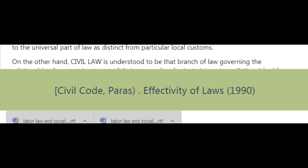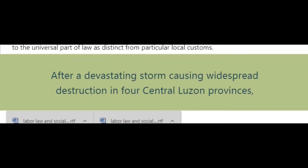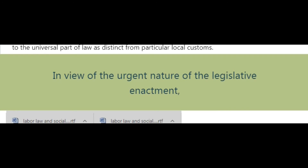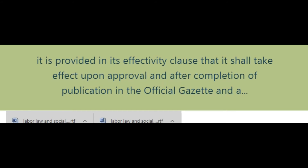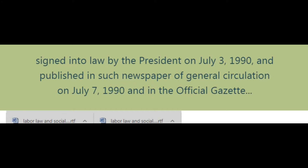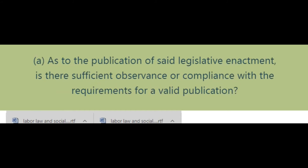Effectivity of laws, 1990: After a devastating storm causing widespread destruction in four Central Luzon provinces, the executive and legislative branches agreed to enact a special law appropriating P1 billion for relief and rehabilitation. Its effectivity clause provides that it shall take effect upon approval and after completion of publication in the Official Gazette and in a newspaper of general circulation in the Philippines. The law was passed by Congress on July 1, 1990, signed into law by the President on July 3, 1990, published in a newspaper of general circulation on July 7, 1990, and in the Official Gazette on July 10, 1990.